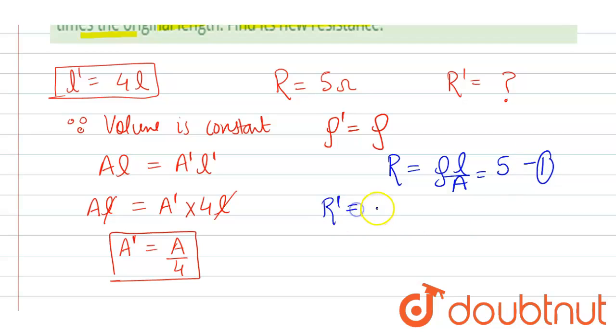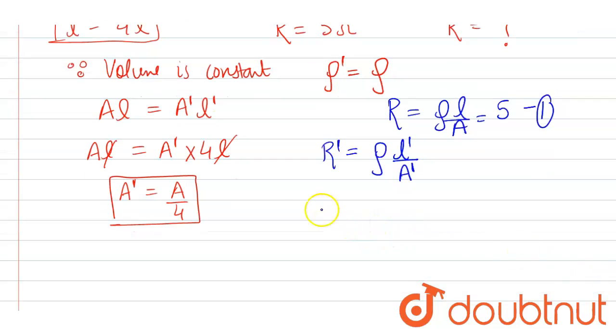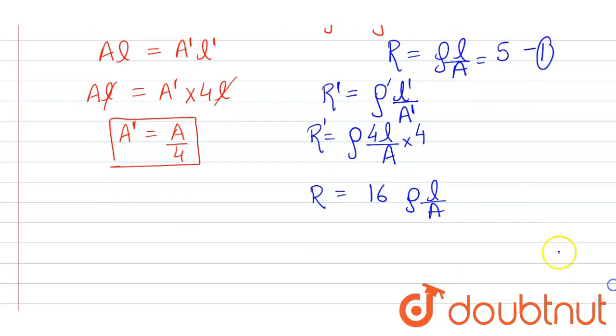will be equal to ρl'/A'. Now putting the value here, l' is 4l and A' is A by 4, so 4 comes in the numerator part. So R' will be equal to 16ρl/A. Now this whole part can be written